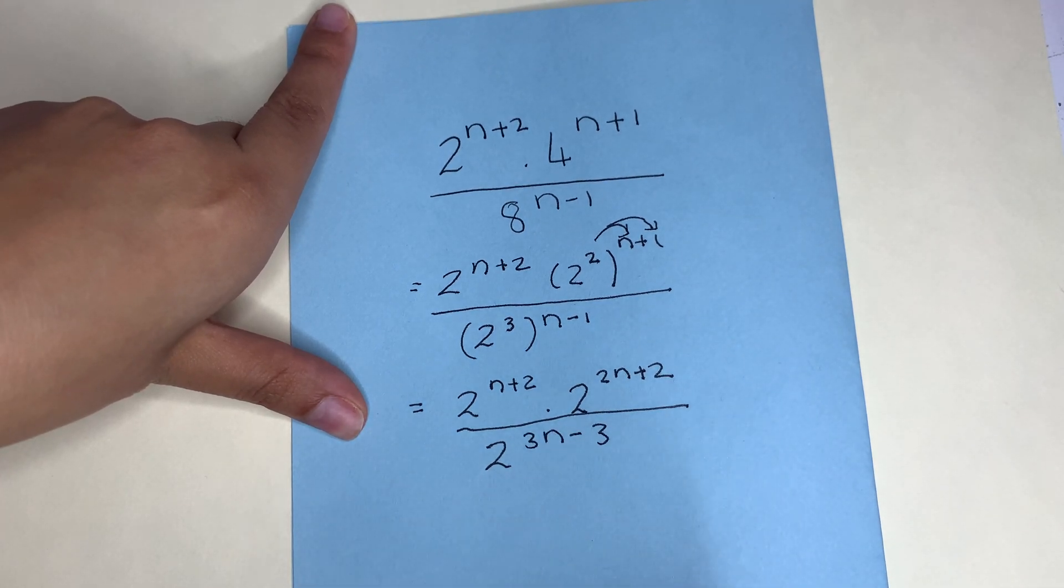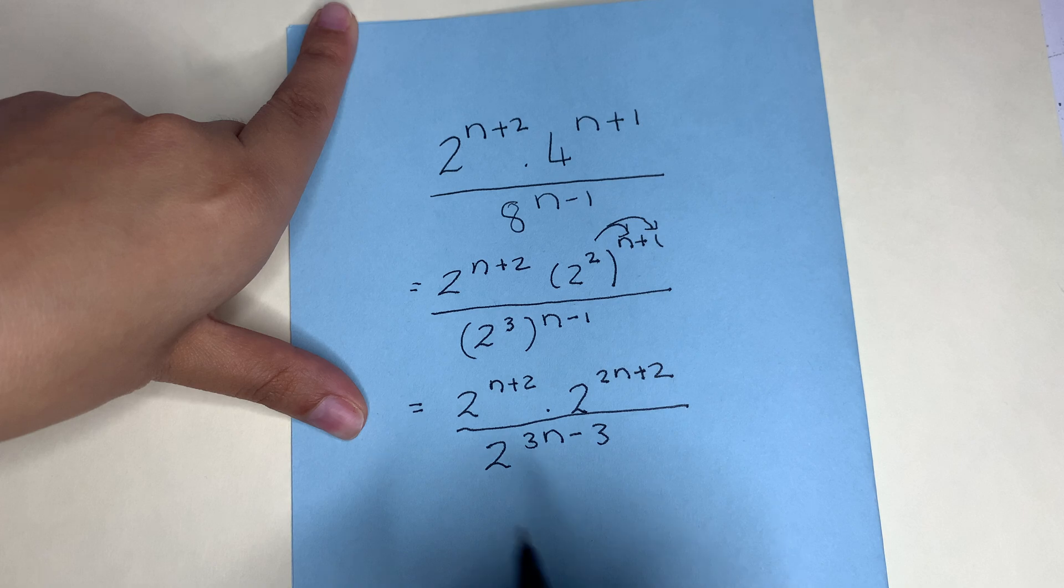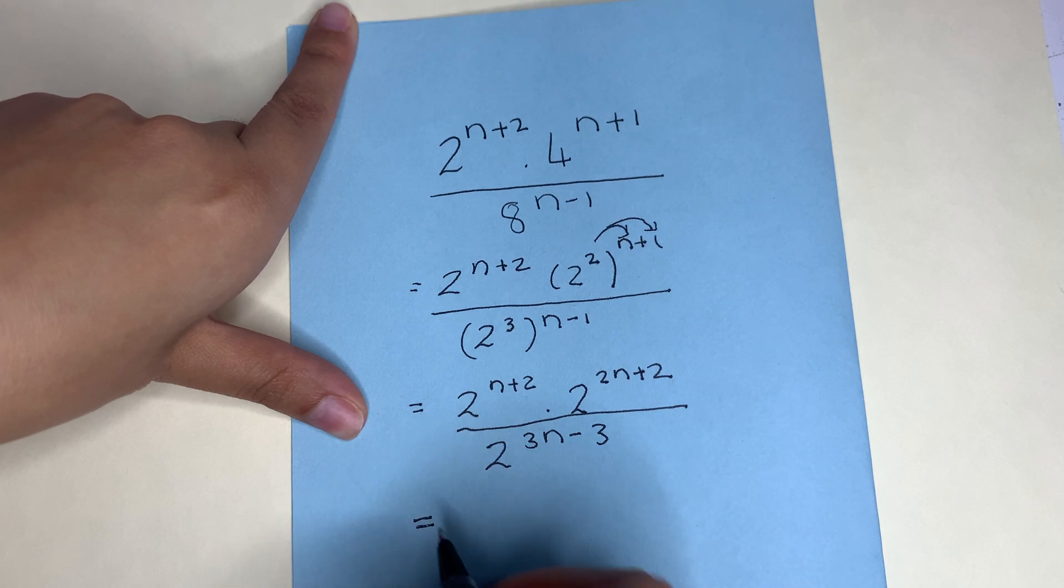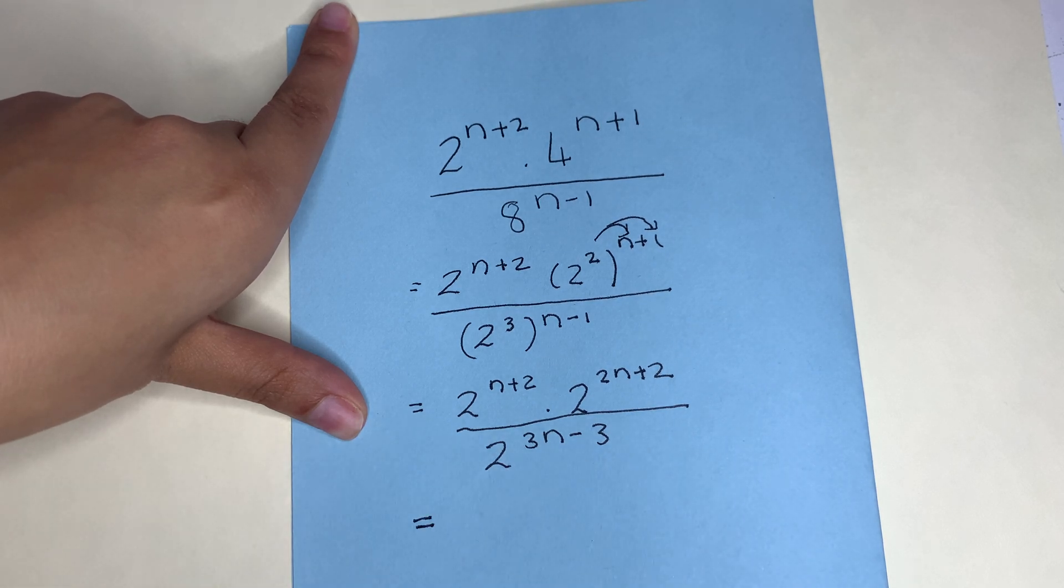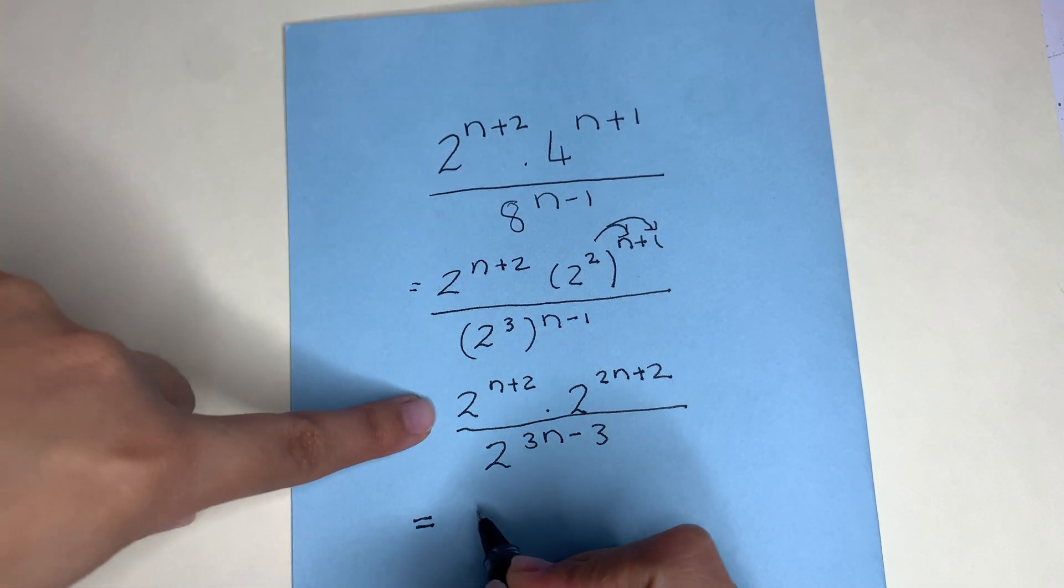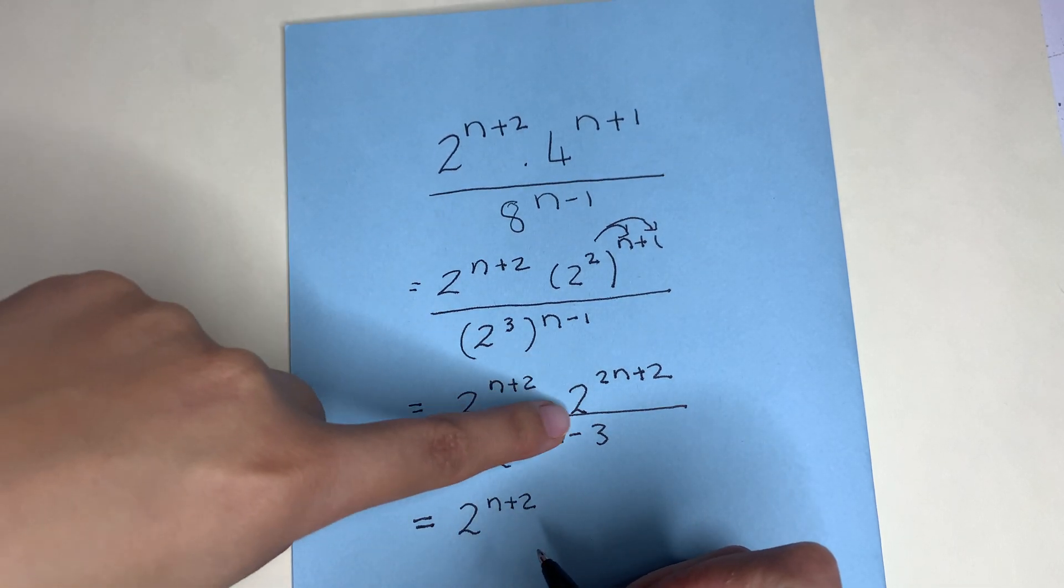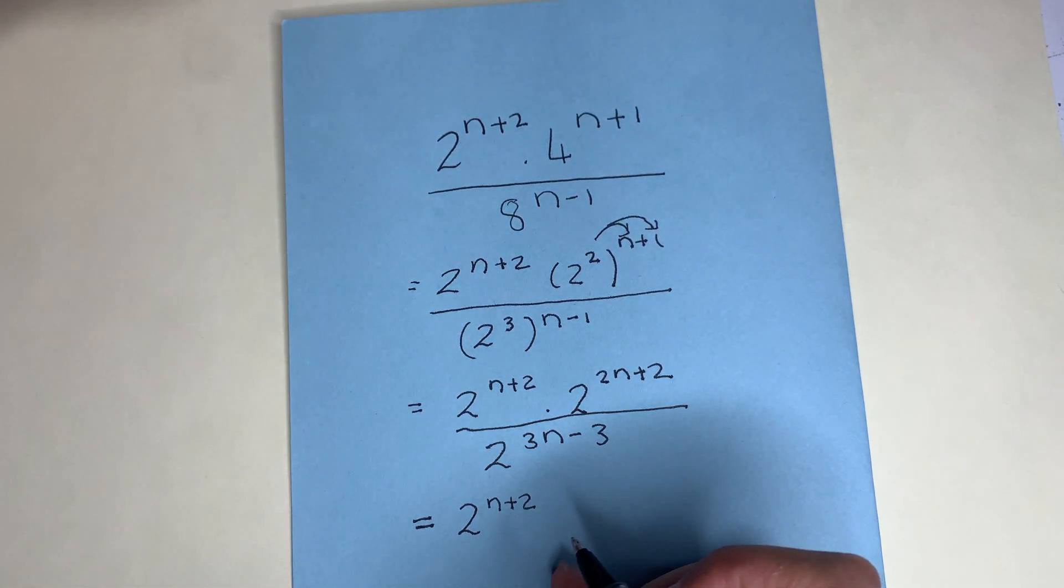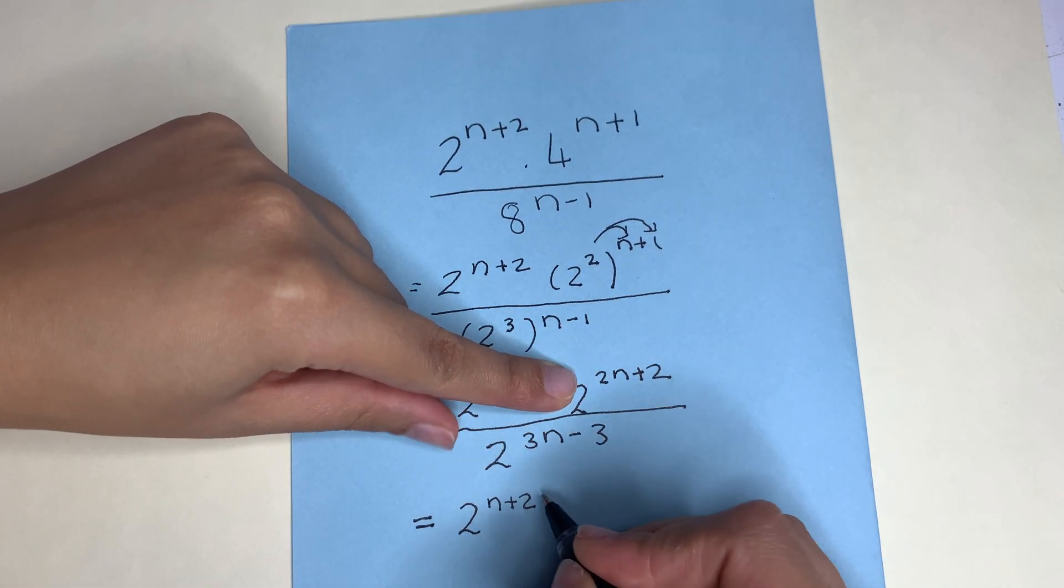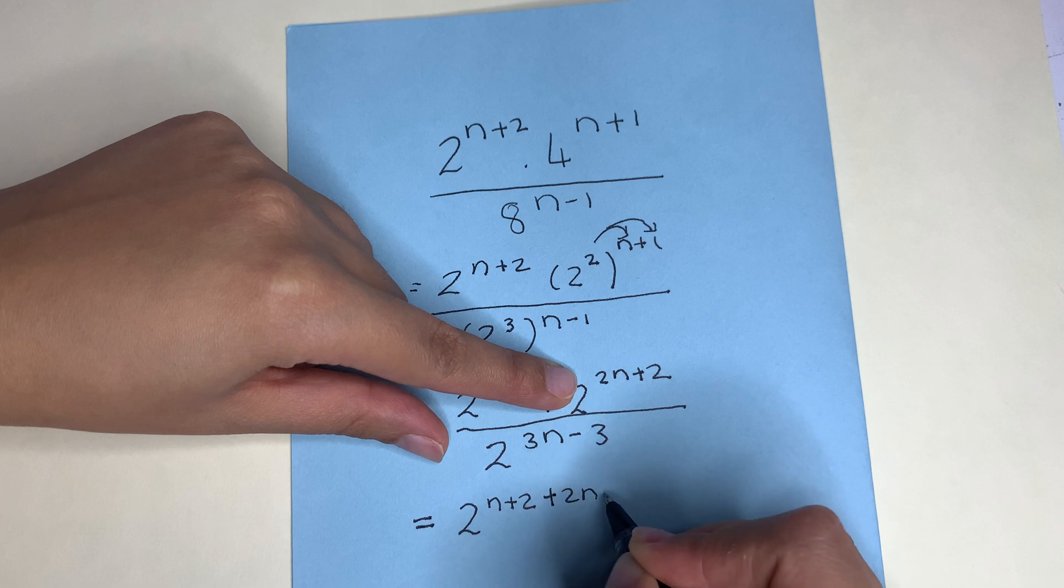Now we can clearly see that all of the bases are 2 so we can compare them. Now there are different ways you can do it but for today I'm going to bring everything into one line. So I will have 2 to the power of n plus 2. Now when I've got the same basis by law 1 I can add the exponents. So here I've got plus 2n plus 2.